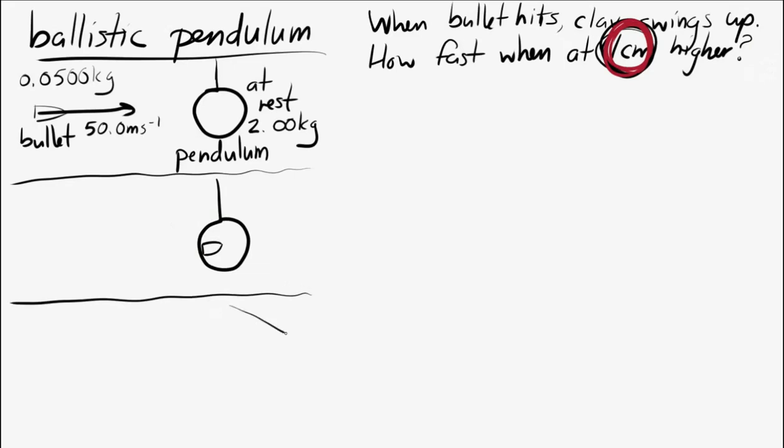And in that swing, we're going to ignore air resistance. So in that swing, no energy is lost, no energy is added. So we can use energy conservation to figure out the final velocity when it's one meter above the ground.